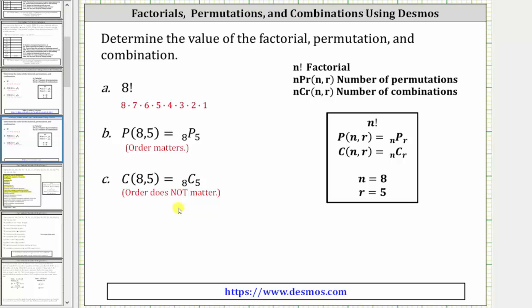Desmos uses the notation shown in the upper right-hand corner here, so we can type this in directly, or we can find these functions under the function menu. Notice for both our permutation and combination, n is equal to eight and r is equal to five.